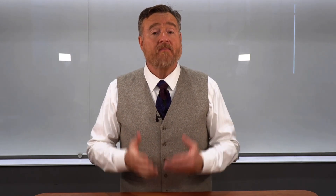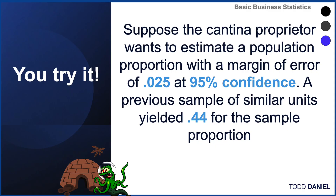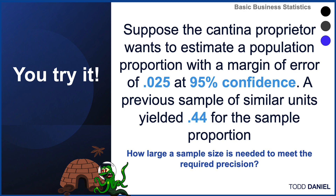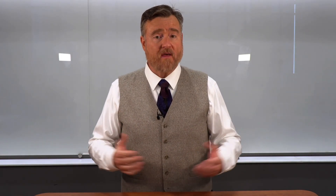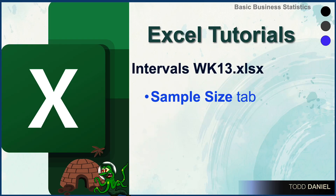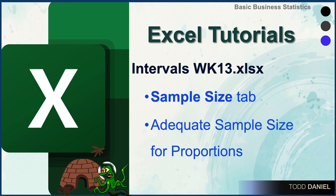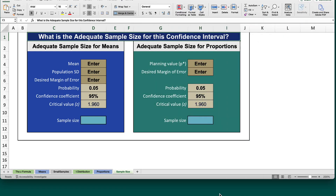Now let's apply what we've learned to that same proprietor of a cantina in a small desert town. Suppose the cantina proprietor wants to estimate a population proportion with a margin of error of .025 at 95% confidence. A previous sample of similar units yielded .44 for the sample proportion. How large of a sample size is needed to meet the required precision? We will return to our intervals week 13 Excel spreadsheet, look at the sample size tab, and find the box labeled adequate sample size for proportions, and begin by plugging in our known values.